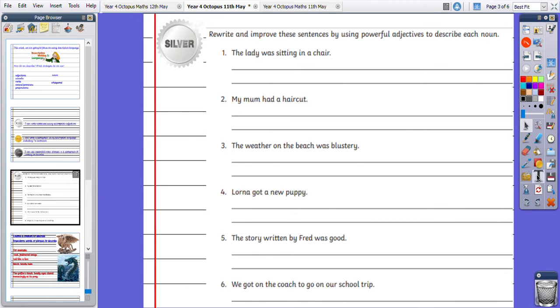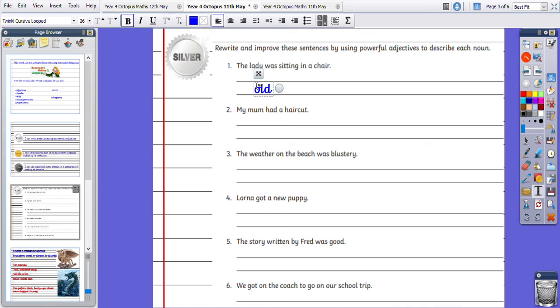So I could use the word old to describe the lady. I could use the word frail to describe the lady. And then thinking about the chair, perhaps wooden, crooked. So think about what vocabulary you could use to uplevel this sentence and rewrite it using those powerful adjectives. You've got six sentences to be getting on with there for silver, just using appropriate adjectives to describe.